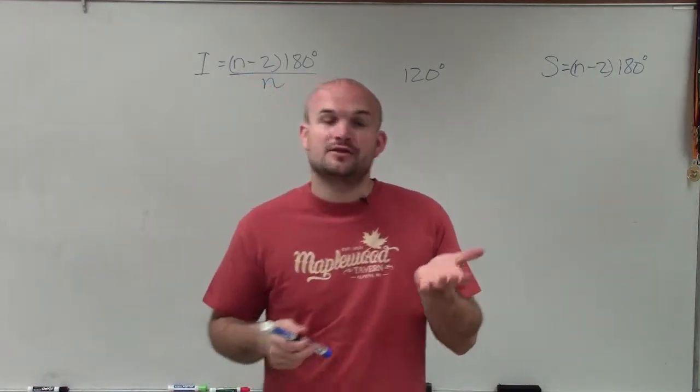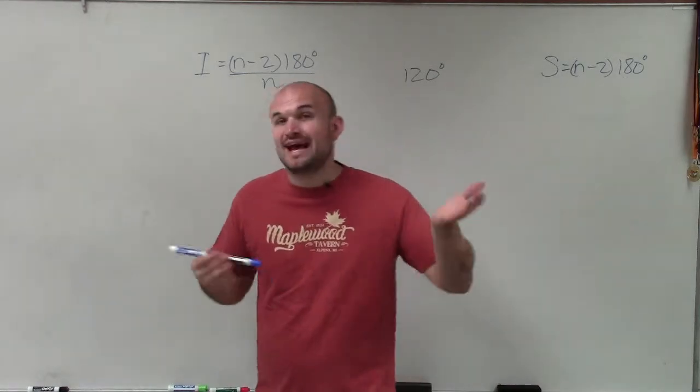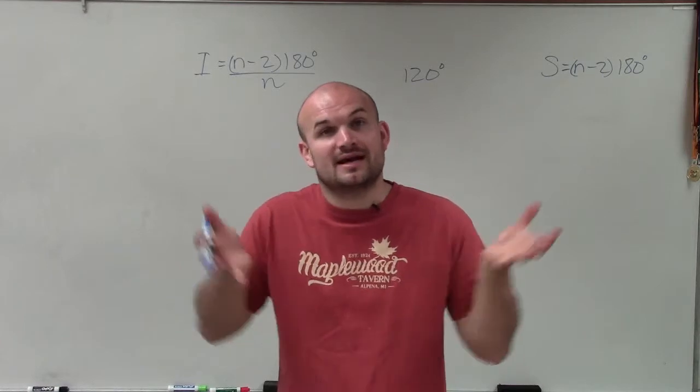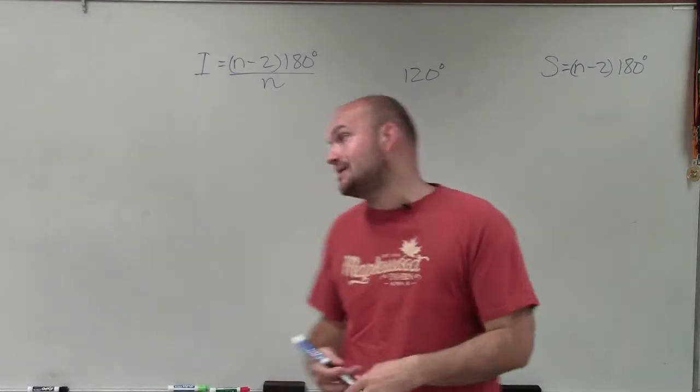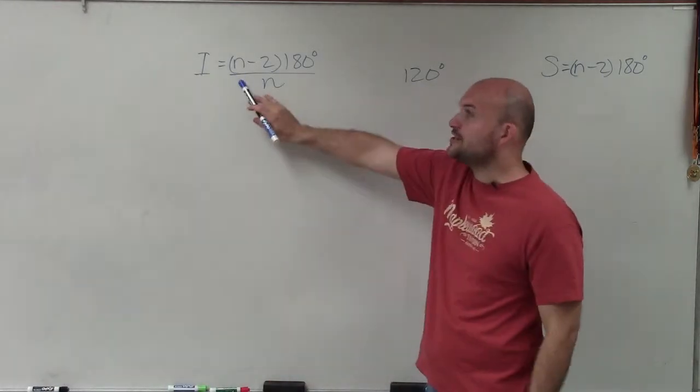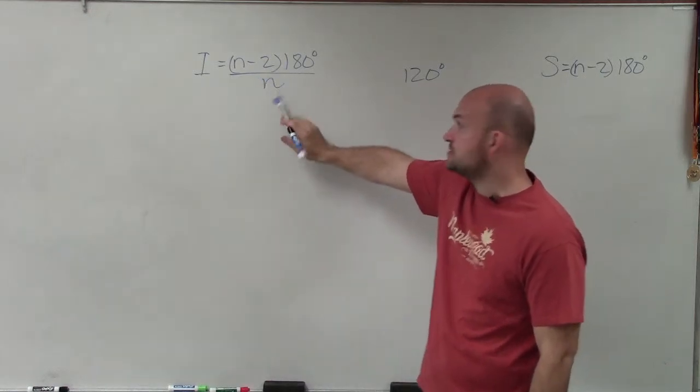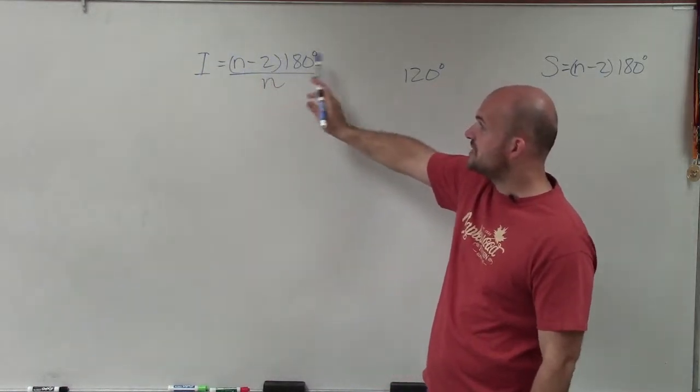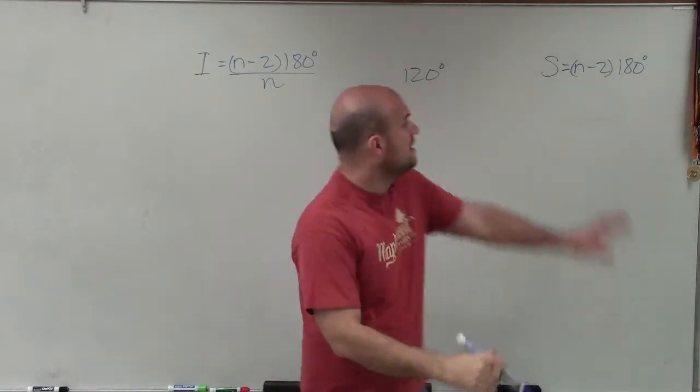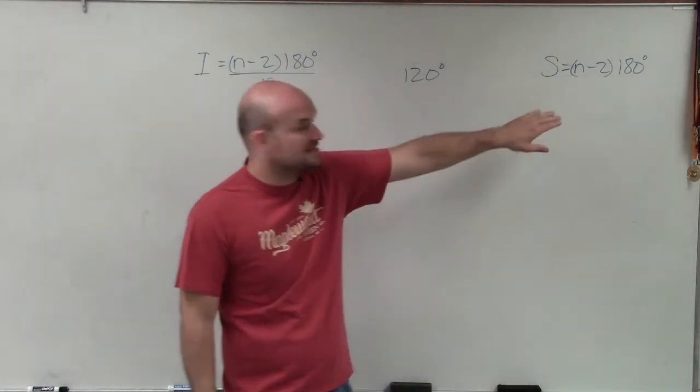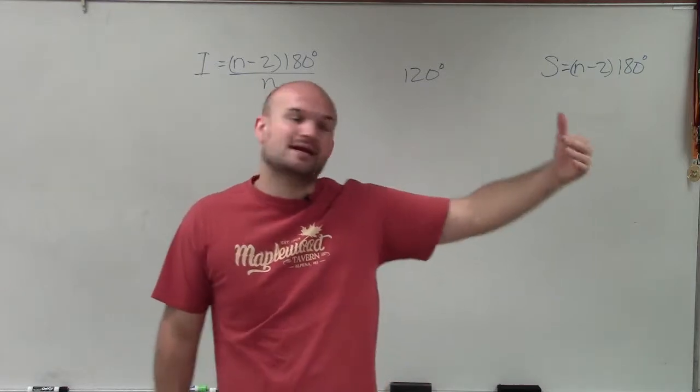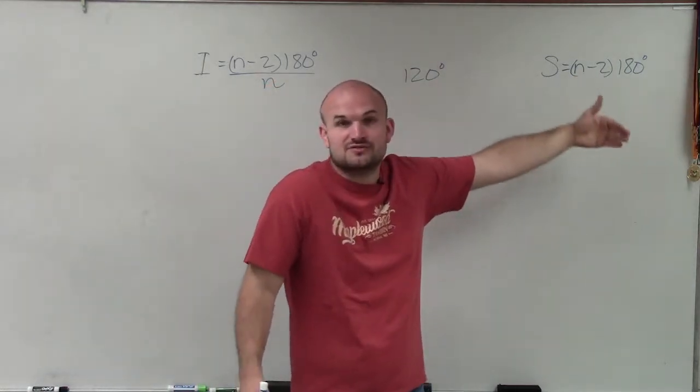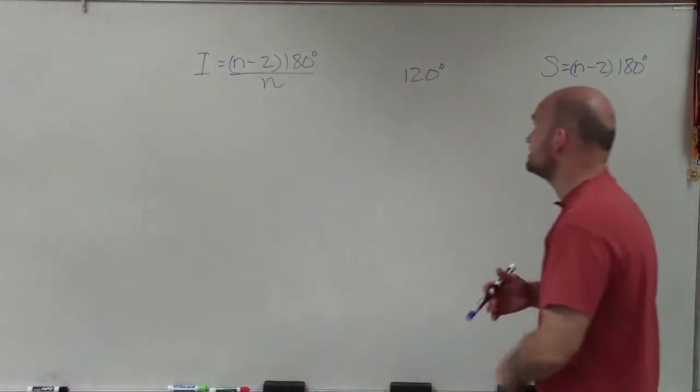Just like when we're determining the measure of one interior angle from one exterior angle, I have to make sure that my rules are saying I'm only dealing with regular polygons. When I'm only dealing with regular polygons, I know I can use this equation, which says the interior angle equals the number of sides minus 2 times 180 divided by the number of sides. And then this one is the sum equals the number of sides minus 2 times 180. However, this doesn't have to be a regular polygon. This is just for any polygon.